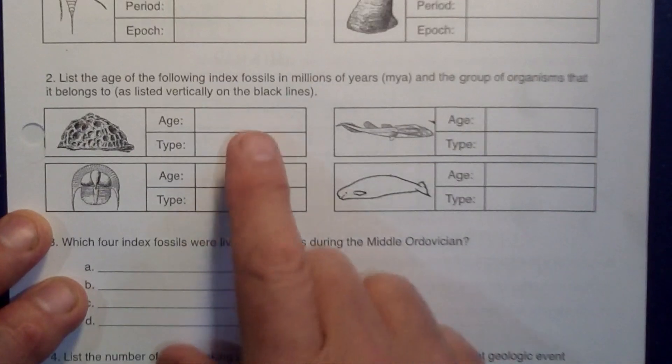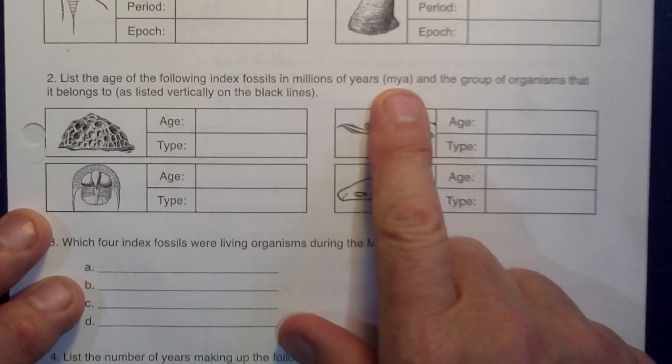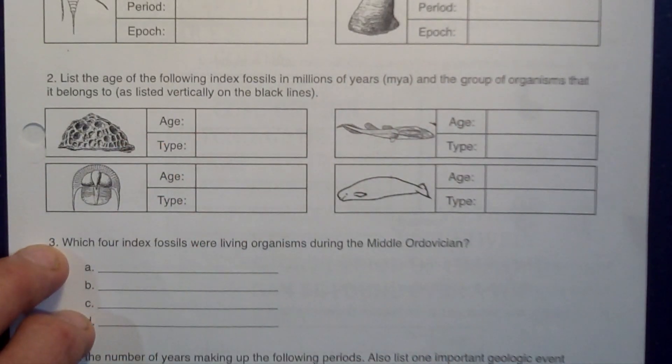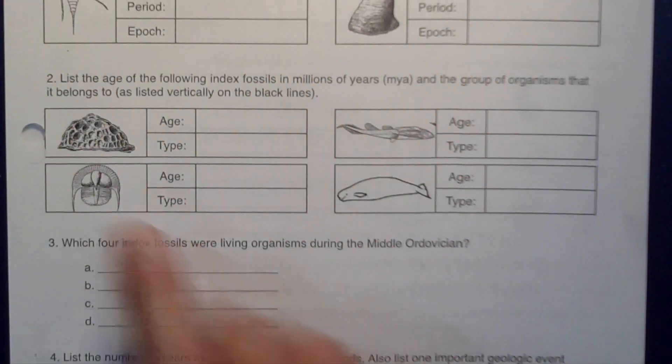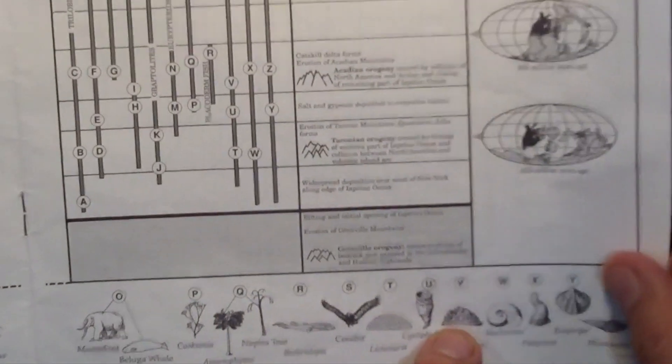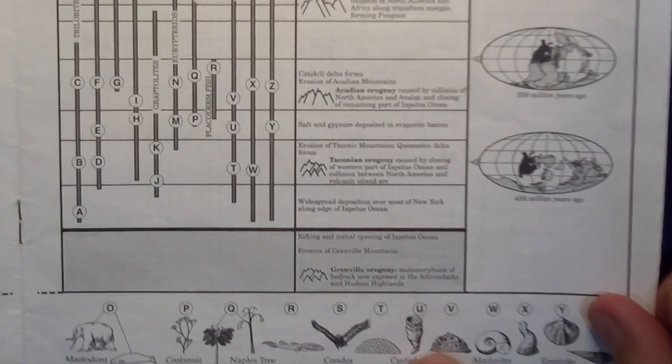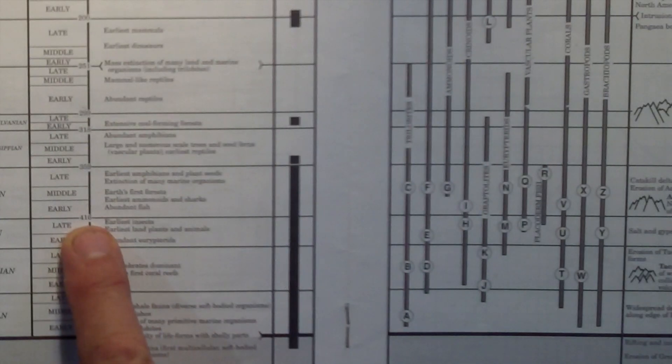For number two, we're asked to find the age in millions of years ago and the type — the group of organisms that existed. Sometimes we'll estimate, other times we'll take a more mathematical approach. The first organism matches up with letter V — that's the corals. Letter V falls in this area right here. This number is 359 million years ago and this is 416, so it would be appropriate to estimate that letter V matches up with somewhere around 400 million years ago.